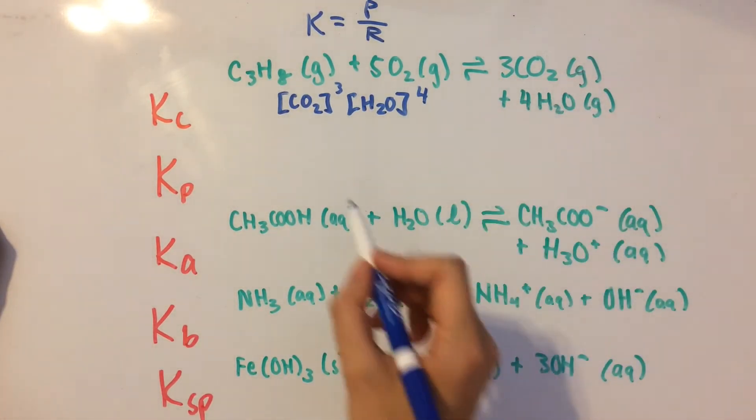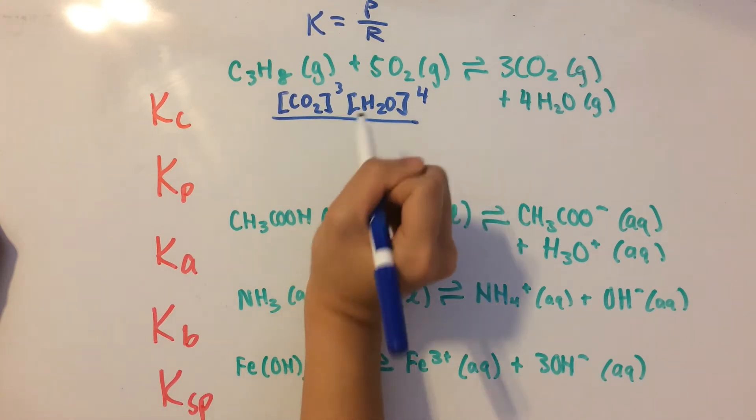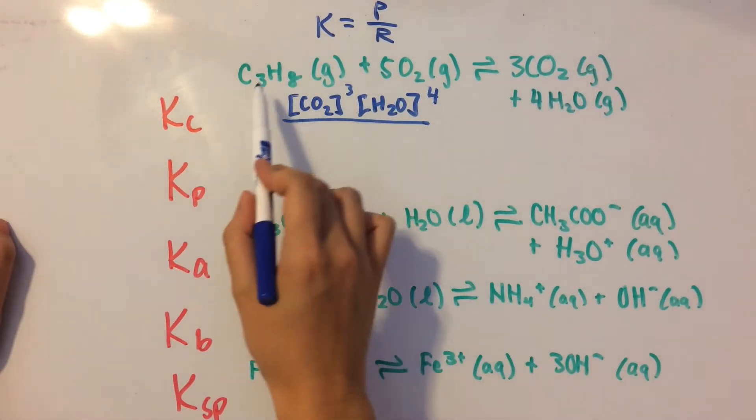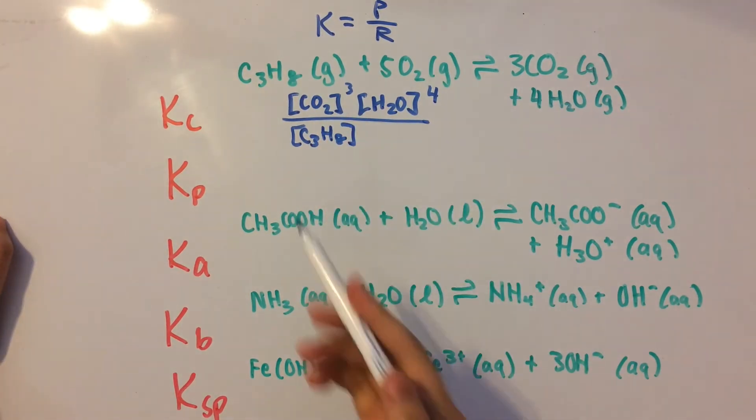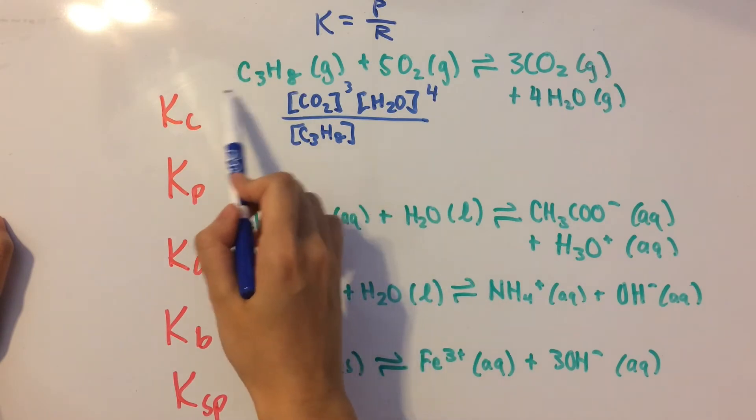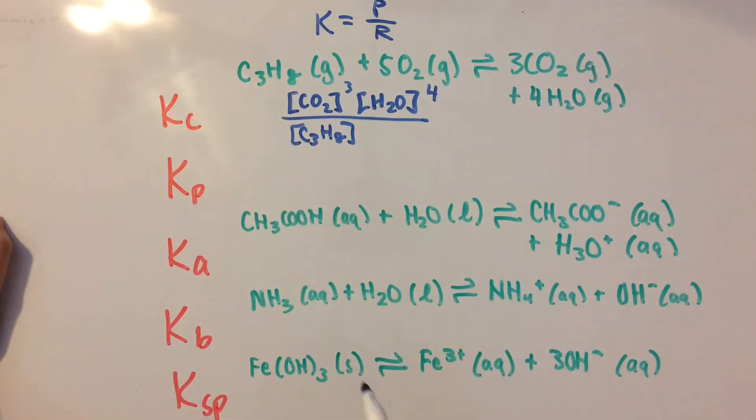Now that we have our products, we can move on to the reactants. So we have C3H8, and we're going to write out the concentration sign for it. It has no coefficient, so we're just going to leave it as it is. The next thing we have is O2, and we're going to raise it to the fifth power.